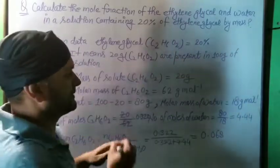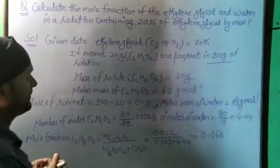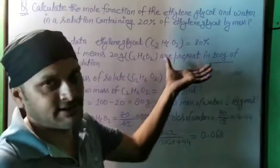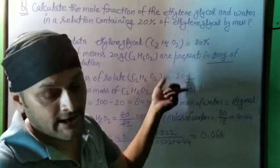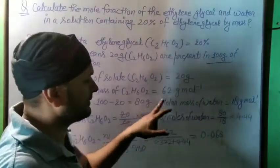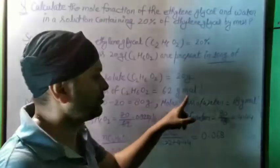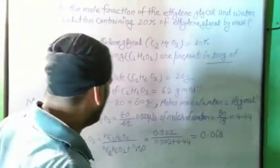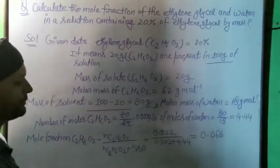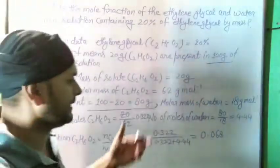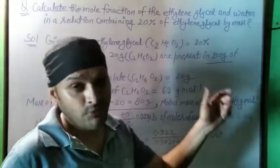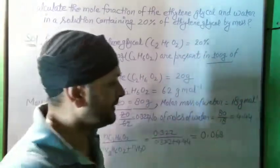The mass of ethylene glycol (solute) is 20 grams, and 80 grams of water remains as solvent in 100 grams of solution. The molar mass of water is 18 g/mol. Now to find the moles of solute, we divide the given quantity by its molar mass: 20 divided by 62 gives 0.322 moles.